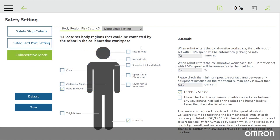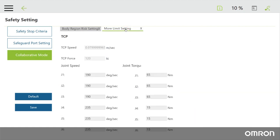You can also click on More Limit Setting to adjust individual joint speed and torque values, but you are limited to using values less than those based on the standards.